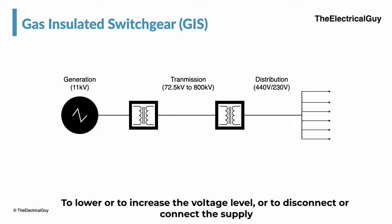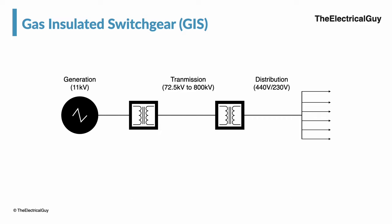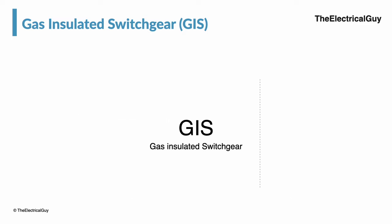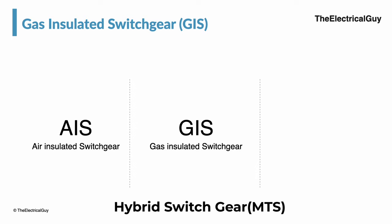To lower or increase the voltage level, or to disconnect or connect the supply, we need different types of switchgear in the substation. GIS or gas insulated switchgear is one of the switchgear technologies used in a substation. This technology differs from available technologies like AIS or air insulated switchgear, or hybrid switchgear, which is also known as mixed type technology.